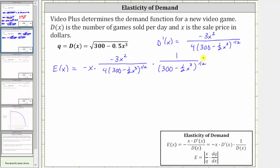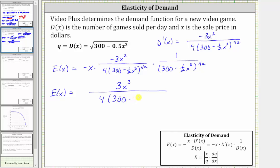Let's find this product. In the numerator, we have negative x times negative three x squared times one, which gives us 3x cubed. In the denominator, we have four, and since the base is the same, we add the exponents: one half plus one half is one, which gives us four times the quantity 300 minus one half x cubed.